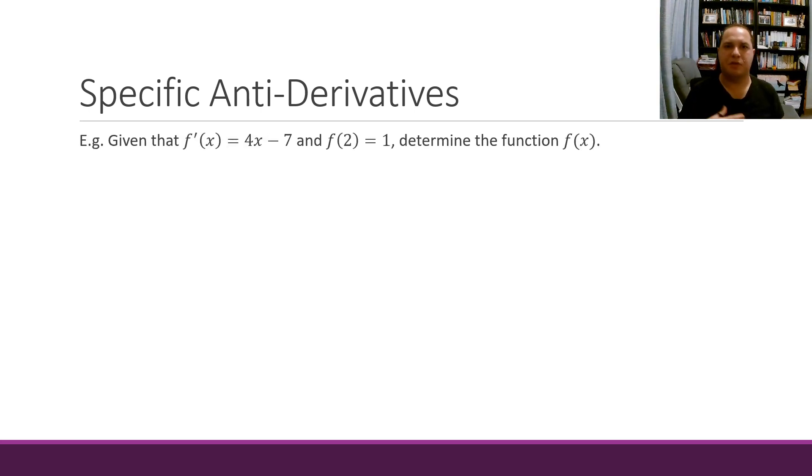When we have to determine a specific anti-derivative, we carry out two steps. First step is to do our anti-differentiation, second step is to substitute in the values that we know to determine the value of our constant of integration, determine our value of c.